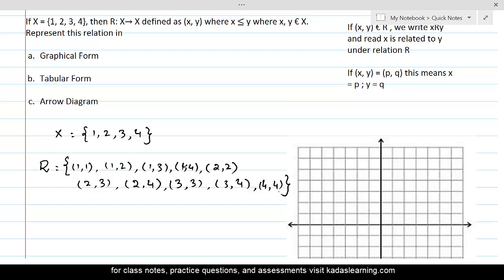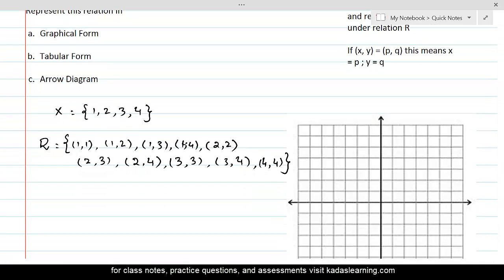Now, we are going to represent this relation in graphical form. And the first element of ordered pairs always goes on the x-axis.